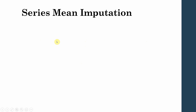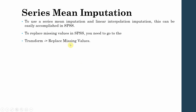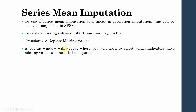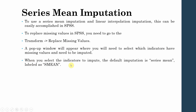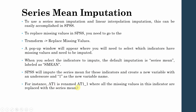Linear interpolation is based on the idea that your data is linear. To use series mean imputation and linear interpolation in SPSS, go to Transform > Replace Missing Values. A pop-up window will appear where you select which indicators have missing values and need to be imputed. The default imputation method is series mean, labeled as 'S Mean.' SPSS will impute the series mean and create a new variable with an underscore and '1' appended to the name — for example, B1 will be renamed B1_1.